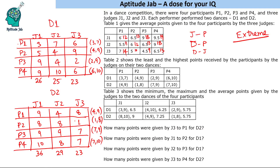Now let's answer the questions. How many points were given by J3 to P1 for D2? That is 8 points. How many points were given by J1 to P2 for D1? That is 5 points. How many points were given by J2 to P3 for D1? That is 4 points. How many points were given by J3 to P4 for D2? That is 7 points. That is the solution to this interesting set.